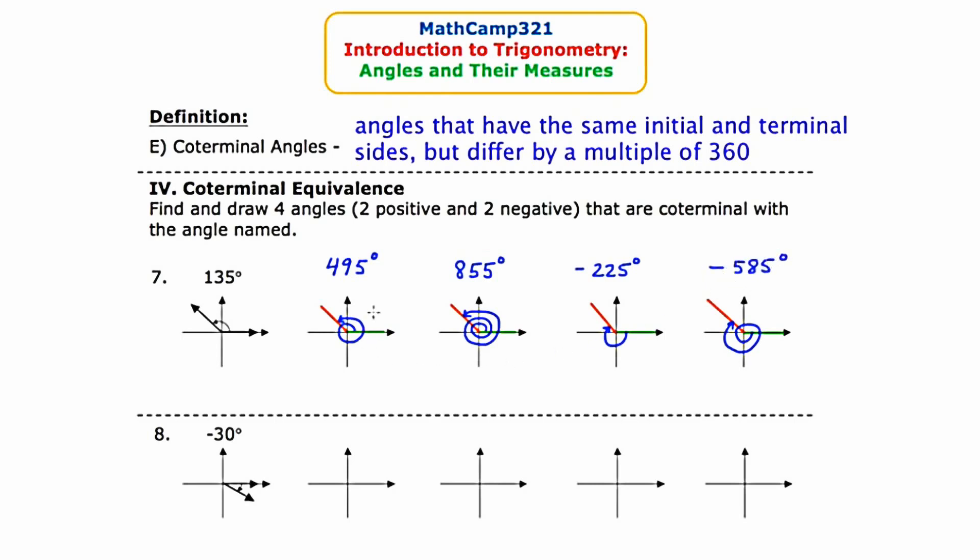So to review, for my positive cases, I start with my home base of 135 and then I add 360. And in this case, I added 720. For the negative case, I start with my home base of 135 and this time I subtract 360 and I subtract 720.